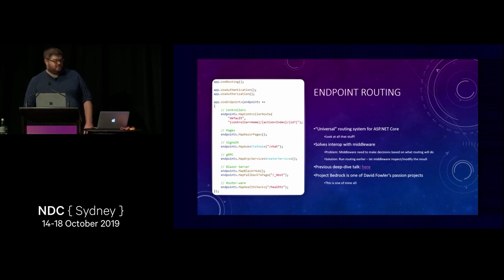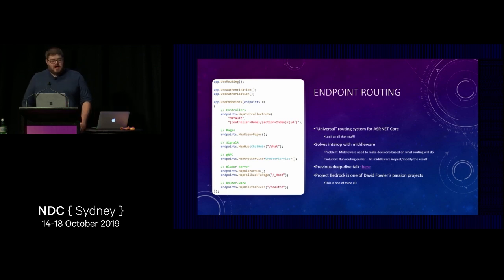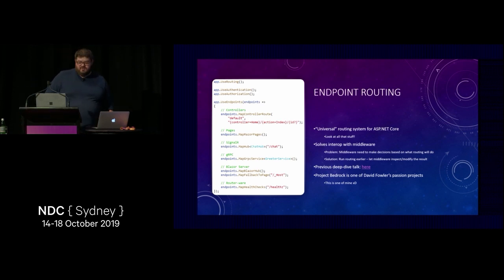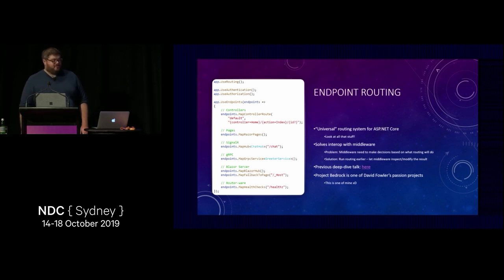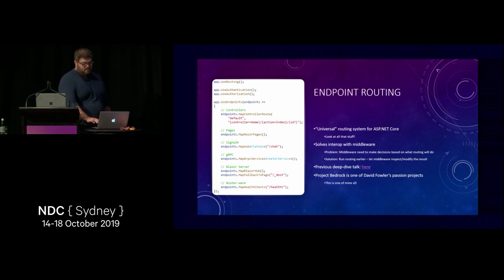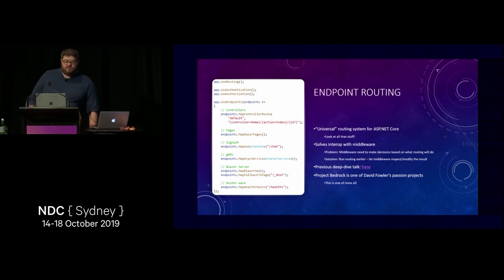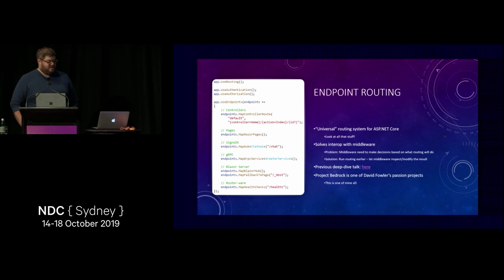Routing was the obvious place to start because so many other decisions are driven by what routing does. In 3.0 we made a change to the routing system and made a new routing system the default — the old one is still there, but we're strongly encouraging everyone to move to it. It's universal, solves a bunch of problems with the old one, and new stuff like Blazor Server and gRPC only integrate with the new system. In this code sample you can see a whole galaxy of stuff plugging into the same routing system: controllers, pages, SignalR, gRPC, Blazor, routerware.